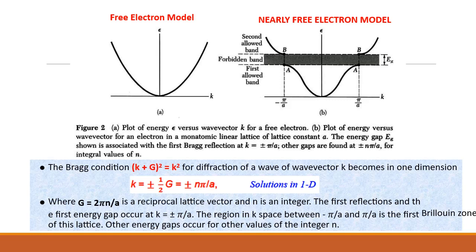The first reflections and the first energy gap occur at k equal to plus or minus pi by a. The region in k space between minus pi by a and plus pi by a is the first Brillouin zone of this lattice. Other energy gaps occur for other values of the integer n.